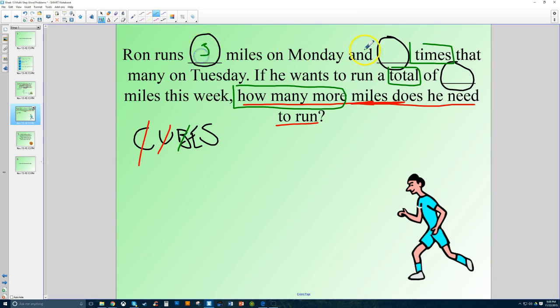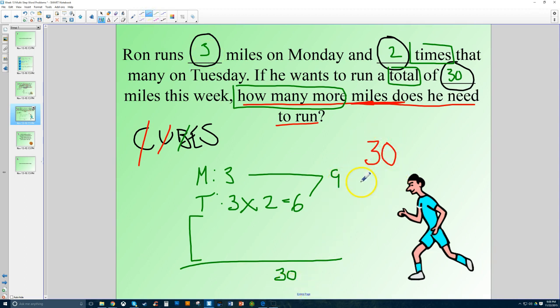So let's fill in some numbers here after we box our keywords. Let's say he runs three miles on Monday. And two times that on Tuesday. If he wants to run a total of, let's say, 30 miles this week, how many more miles does he need to run? So let's just pull out that information here. Monday, he runs three. Tuesday, he does two times that. So that's three times two. Which equals six. And he wants to run a total at the end of the week. He wants to have 30 miles altogether. So I know right now he has ran a total of nine miles on Monday and Tuesday. So the rest, Wednesday, Thursday, and Friday, must be a number that would get us to 30. Now, because it's how many more, I can actually figure out what that number is. Because I know nine plus something will give me 30.